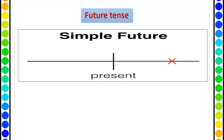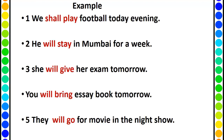Now simple future tense. The keywords are 'shall' or 'will' plus the base form of the verb. The action has not started yet — it is going to start in the nearest future. It can be after two hours, after a day, after a week, a month, a year, or maybe after two or three years. Example: He will stay in Mumbai for a week.